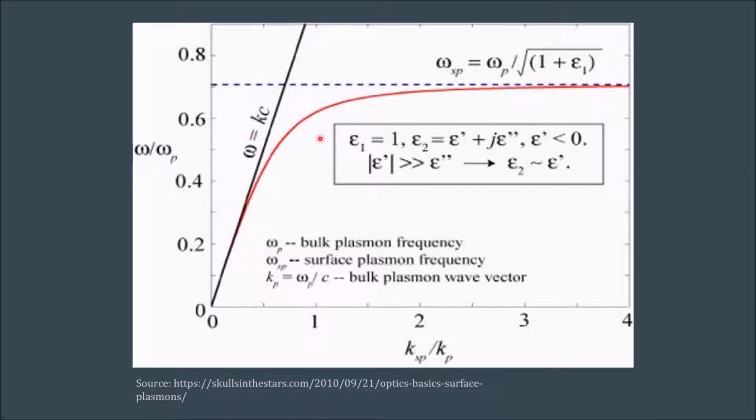This curve compares the dispersion relation of a normal electromagnetic wave and that of a surface plasmon. As we can see, for a surface plasmon, the value ω upon ωp, the ratio, saturates to a value of around 0.7. This follows from our earlier discussion where we showed that surface plasmon cannot exist for a frequency above this value.